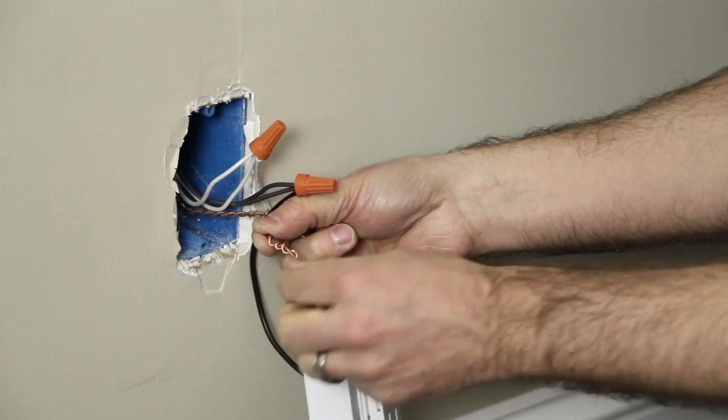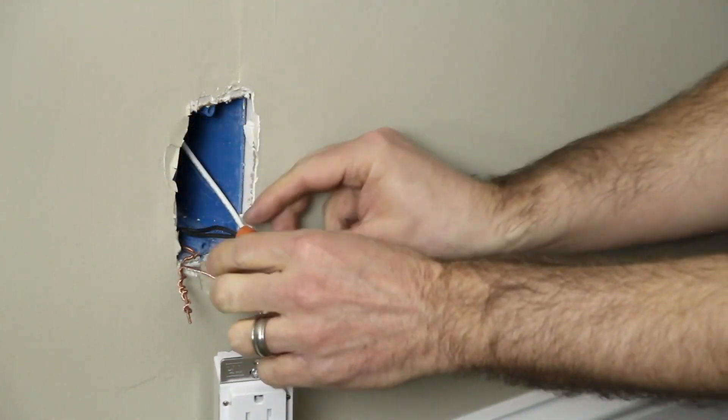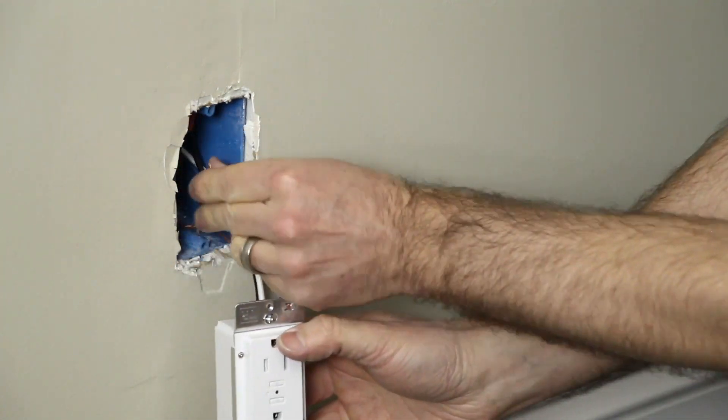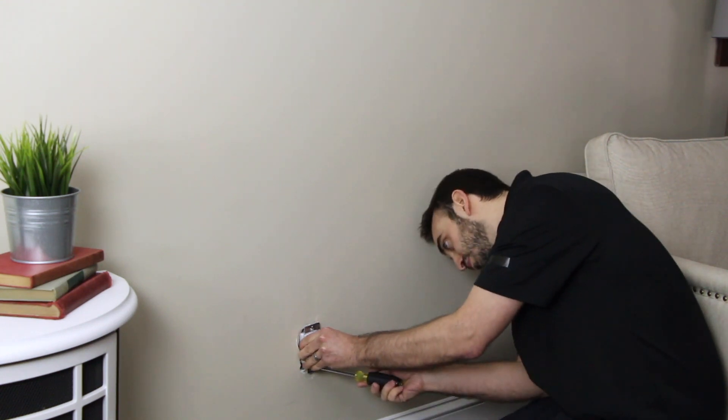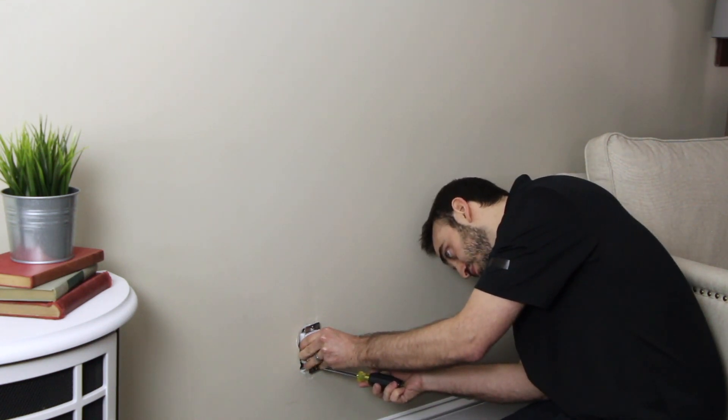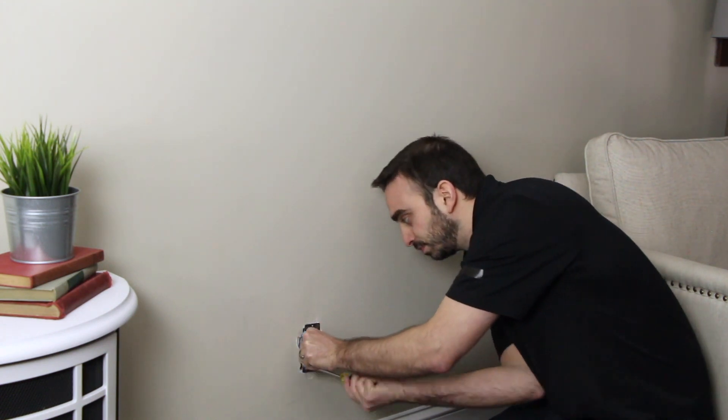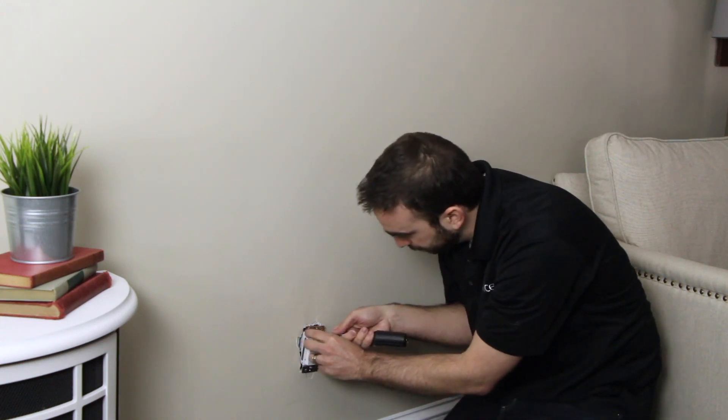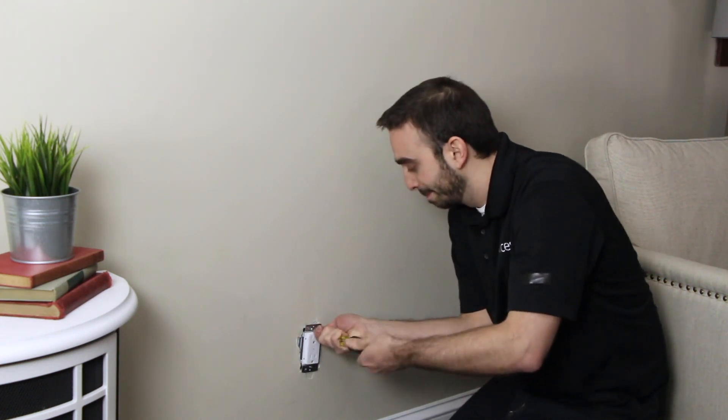Ensure all wire nuts are securely fastened. Carefully push the wires into the gang box and install the wall outlet into the gang box, taking care not to pinch any wires. Secure the iDevices Wall Outlet into the gang box with the provided screws. It's best to start both screws before tightening to keep installation easy and ensure the outlet is straight.